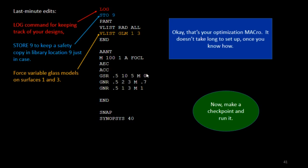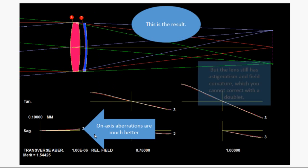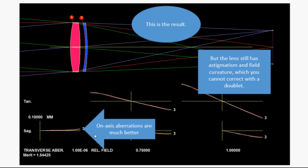Now make a checkpoint and run it. And this is the result. You see, on axis, the aberrations are much better. But the lens still has astigmatism and field curvature. Can you spot that? These two slopes are different, so there's astigmatism. And the average is not zero, so there's field curvature.